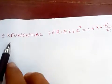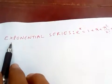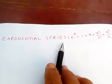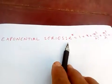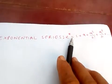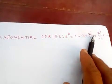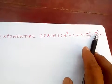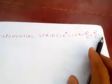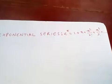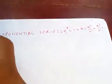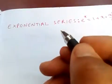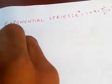Hi friends. I'm going to prove the exponential series: e to the x is equal to 1 plus x plus x squared by 2 factorial plus x cubed by 3 factorial plus and so on. Let's prove this.